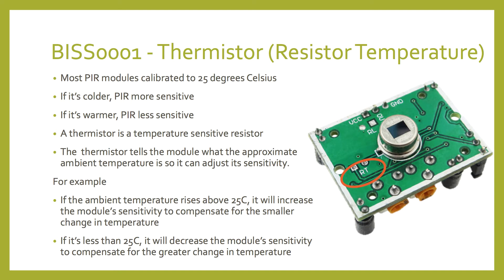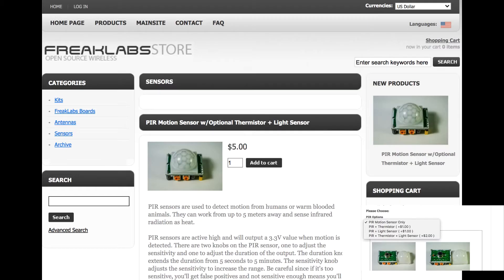A thermistor will also decrease sensitivity at colder temperatures to decrease the number of false positives. If you're wondering why you're getting so many false positives from your camera trap, it's possible the PIR sensor isn't thermally compensated. If you're handy with a soldering iron, we have pre-compensated PIR sensors and thermistors available in the Freaklabs webshop.